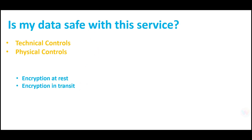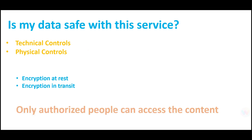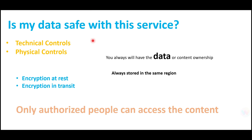Is the data safe with this service? Yes — there are technical controls and physical controls built in, including encryption at rest and encryption in transit, just like your databases and other services. Only authorized persons can access the content, which means it is strongly integrated with IAM. Importantly, you are always the owner of the data and content — it does not go to AWS, and AWS or Comprehend does not become the owner. This is very important from a certification standpoint.